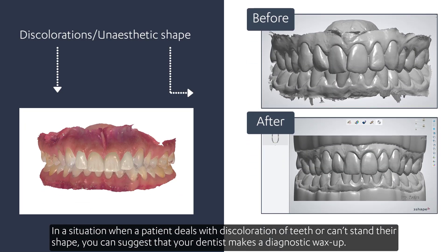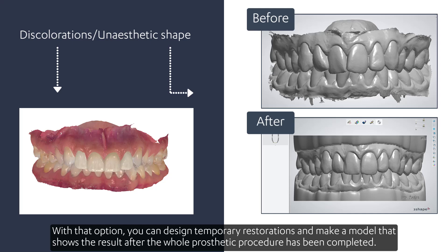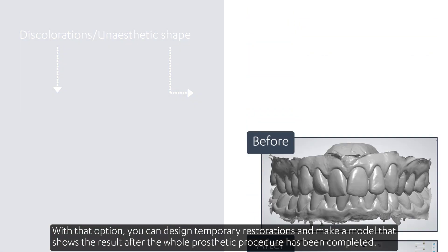In a situation when a patient deals with discoloration of teeth or can't stand their shape, you can suggest that your dentist makes a diagnostic wax-up. With that option, you can design temporary restorations and make a model that shows the result after the whole prosthetic procedure has been completed.